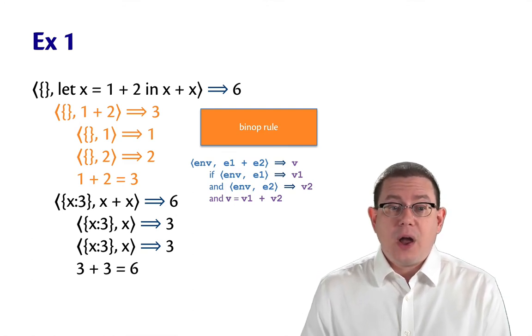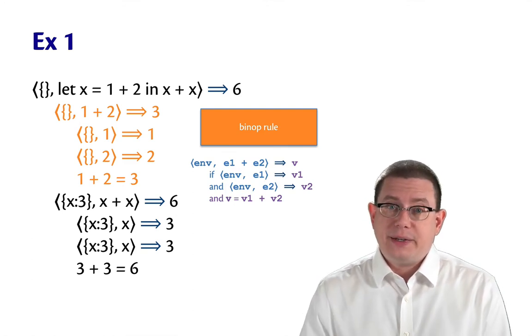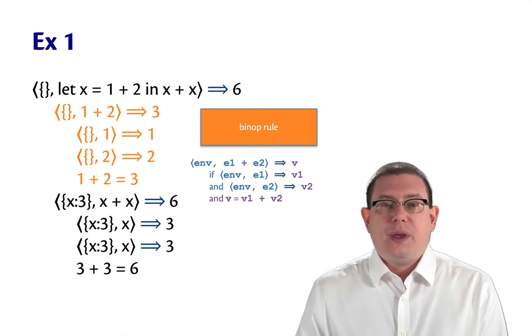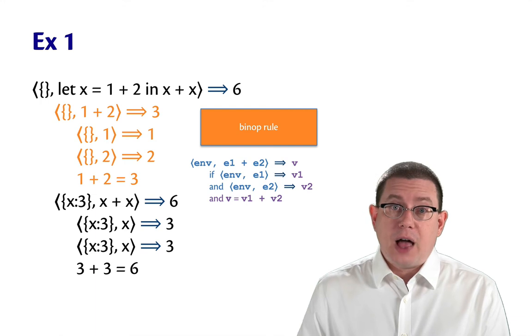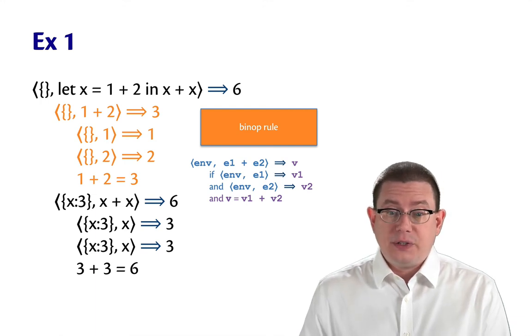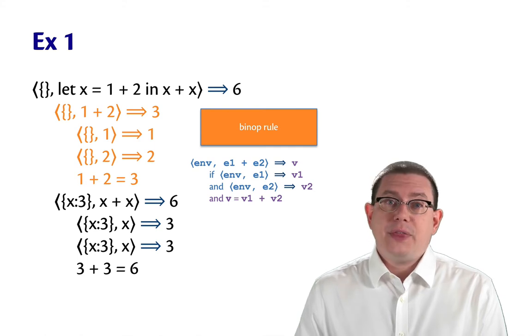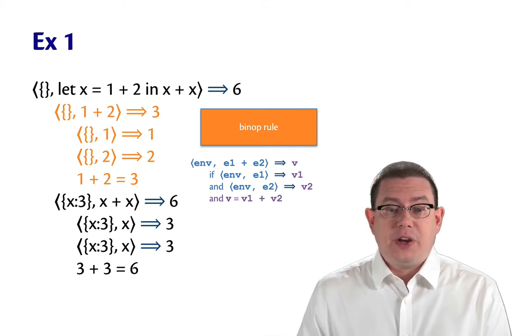I've then used the binary operator rule on top of that to conclude that one plus two evaluates to three. And that's because I need to individually evaluate each of the sub-expressions E1 and E2 and then do the result of the primitive operation.